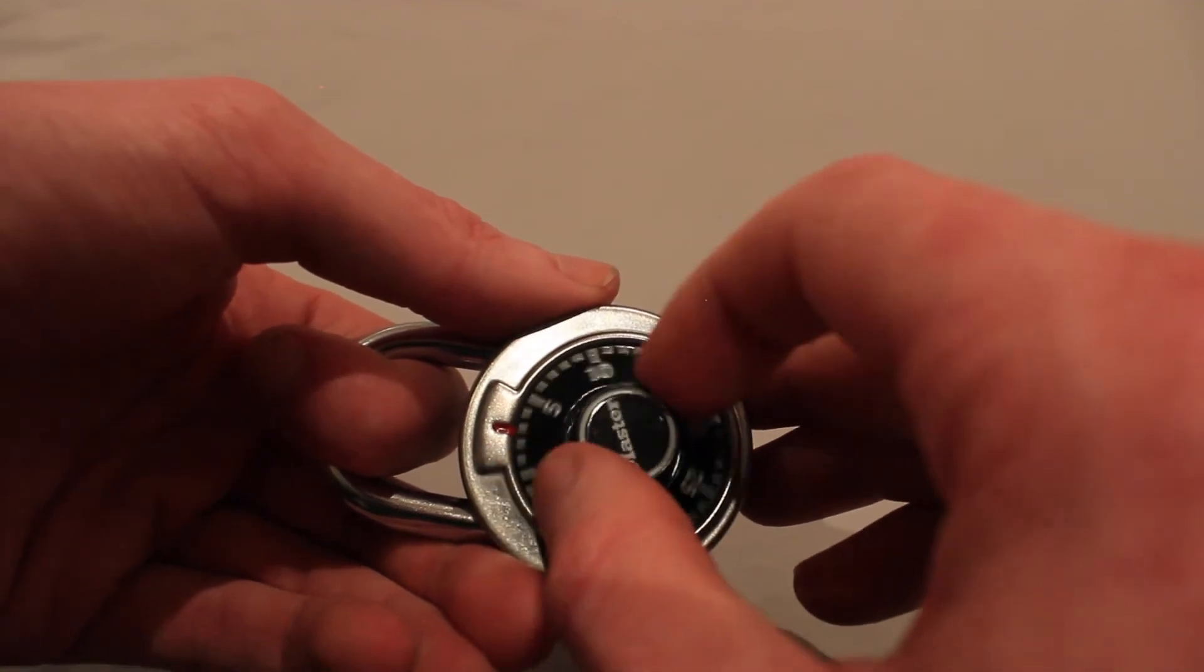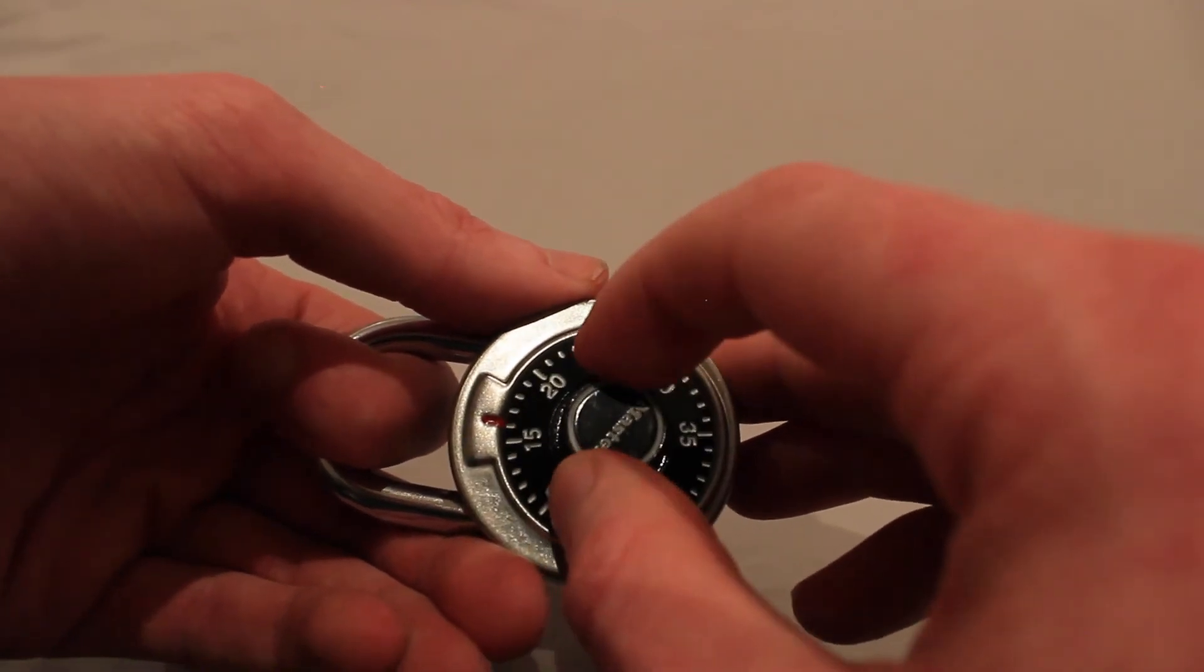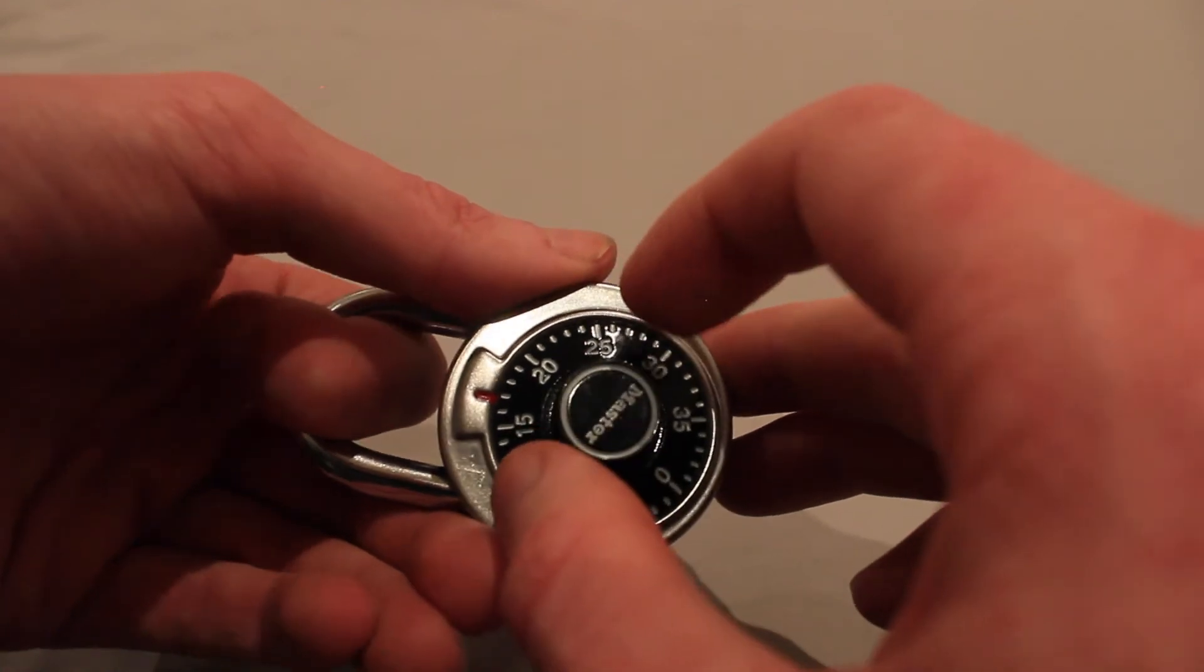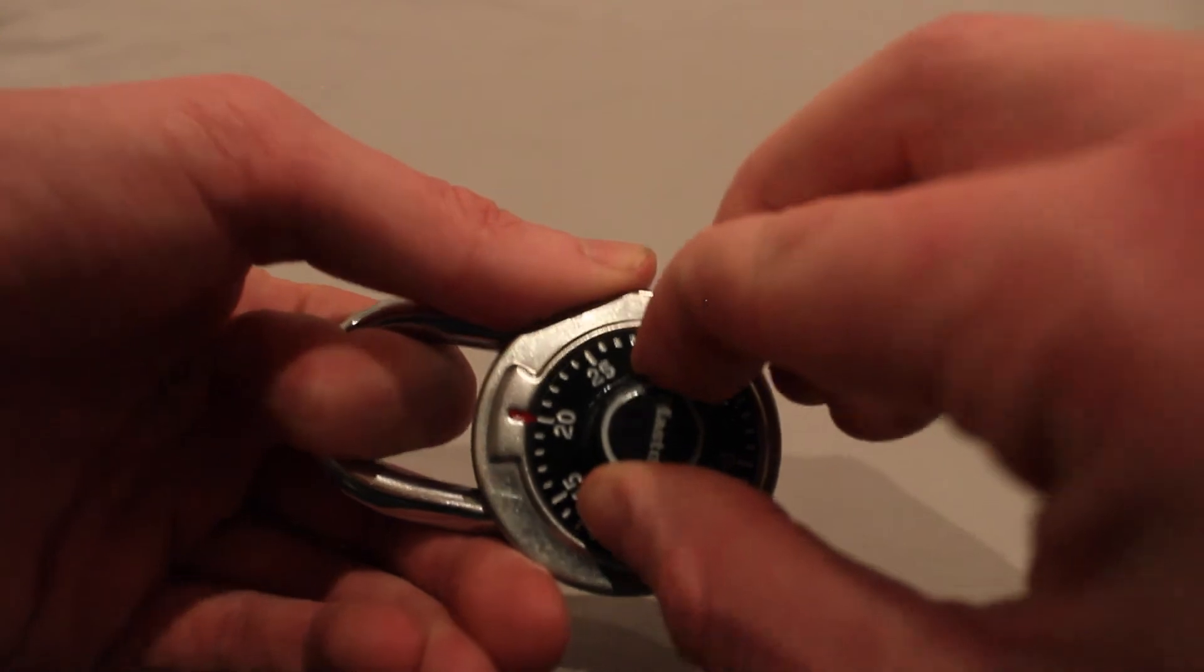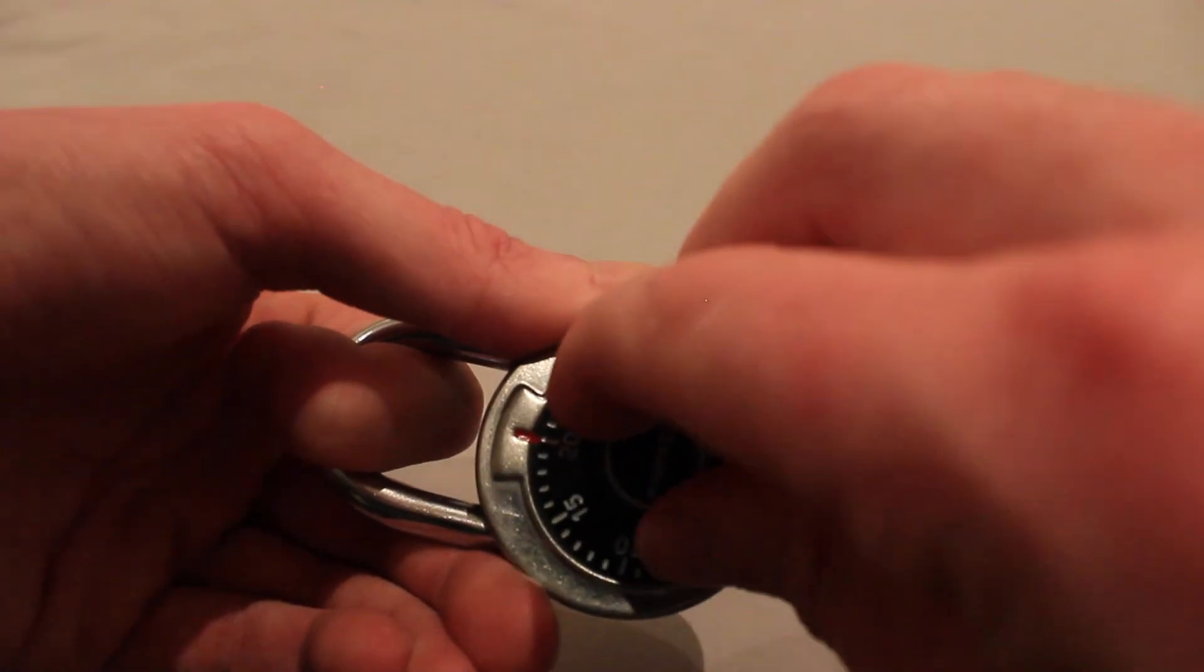You'll notice the dial will stop spinning freely when it gets close to the second key. Apply more pressure to the shackle and very slowly continue turning the dial counterclockwise until the shackle jumps again, at which point the second key has been found and another audible click can be heard.